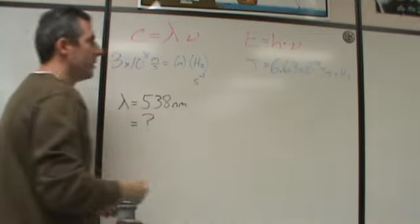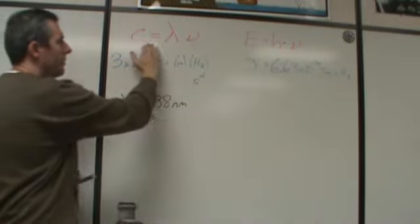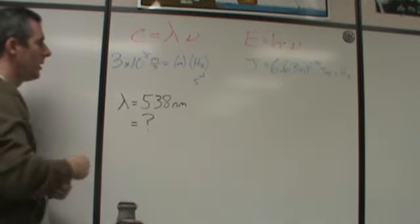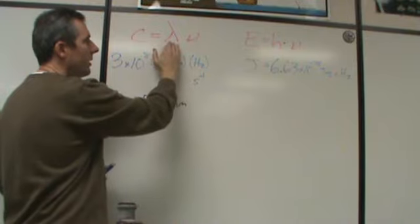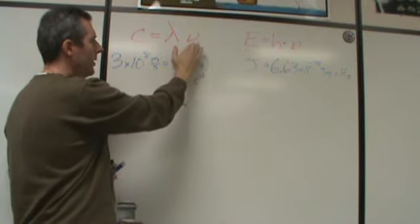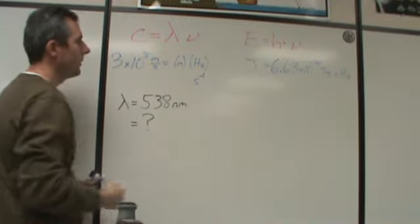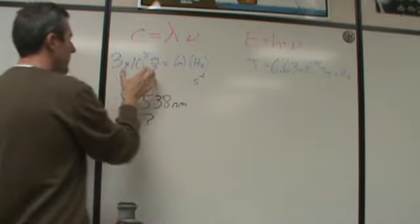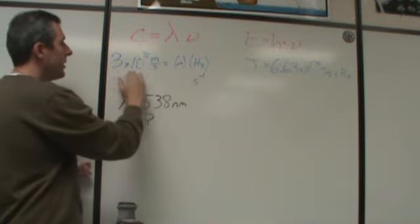So calculations in chemistry are trying to get that idea across, and they start with a very simple set of two equations. The first equation is c = λν. Lambda is this character here, looks like an upside-down Y. Nu is the Greek letter as well, it looks like a V with a little curvature to it.